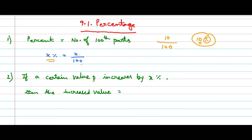If a certain value P is increased by x percent, then the increased value will be (100 + x)% of P. Initially the value is P, and it is increased by x percent, so the increased value is (100 + x)% of P.